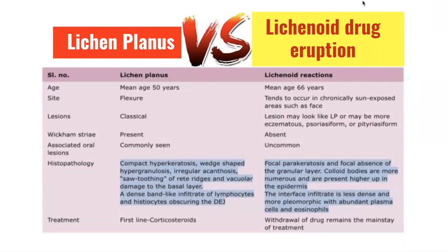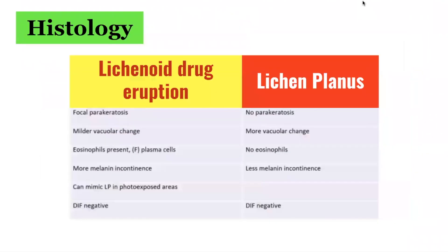Regarding treatment, with lichen planus the first-line treatment is corticosteroids, whereas with lichenoid drug eruption the main action is withdrawal of the culprit or causative drug. This slide further elucidates the differences in the histological findings of lichenoid drug eruption versus lichen planus.